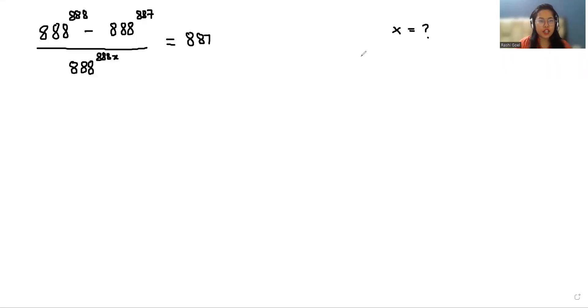Hello everyone, welcome to my channel. My name is Rashid Oyal and in this video we are going to solve 888 power 888 minus 888 power 887 divided by 888 power 888 x equals 887 and we have to find the value of x.